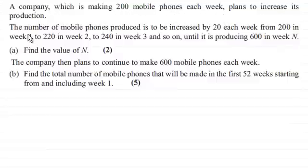And the number of mobile phones produced is to be increased by 20 each week from 200 in week 1 to 220 in week 2, to 240 in week 3, and so on until it is producing 600 in week n. And in the first part we've got to find the value of n.